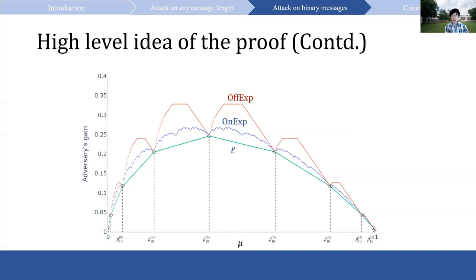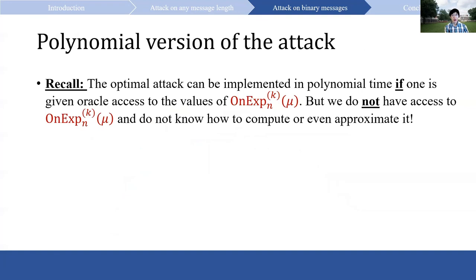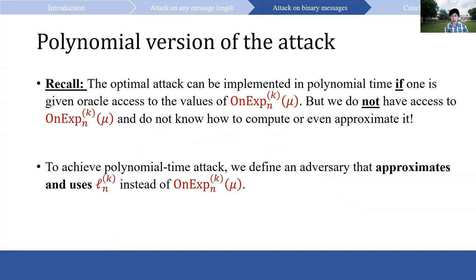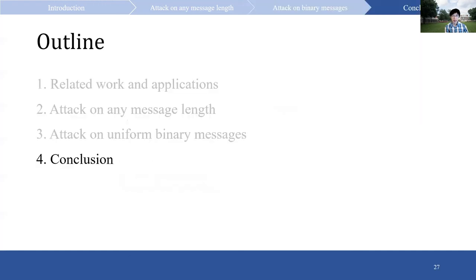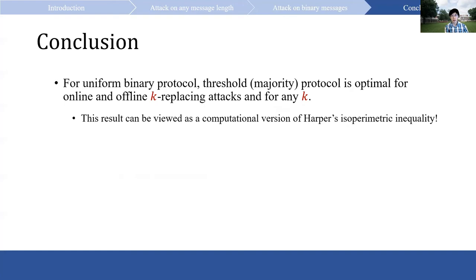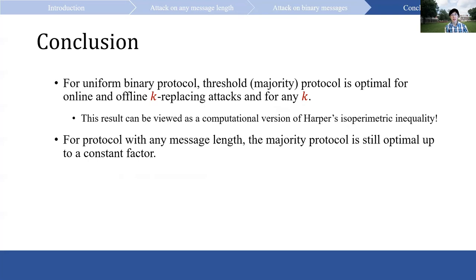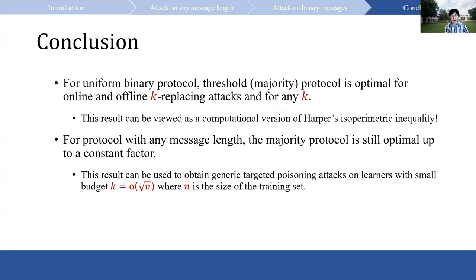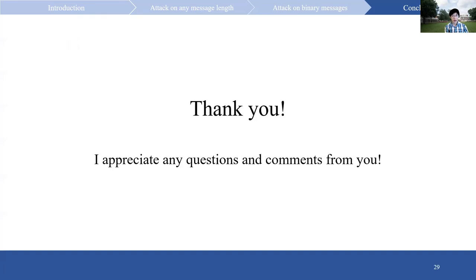To achieve a polynomial time attack, we define an adversary that approximates and uses L instead of the online expansion function. The induction proof still shows that using L instead of online expansion works. That finishes our second result. In conclusion, for uniform binary protocols, the threshold majority protocol is optimal for online and offline k-replacing attacks for any k — a computational version of Harper's isoparametric inequality. For protocols with arbitrary message length, the majority protocol is still optimal up to a constant factor, and this result can be used to obtain generic targeted poisoning attacks on learners with small budget k, where n is the size of the training set. Thank you; I appreciate any questions and comments.